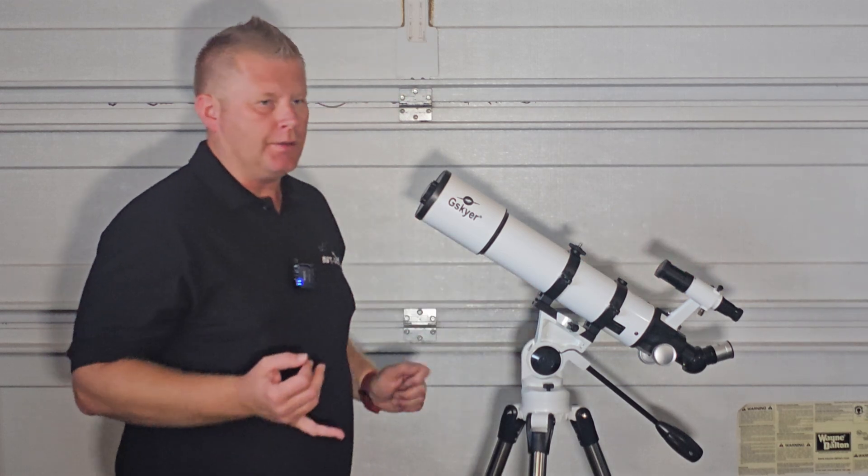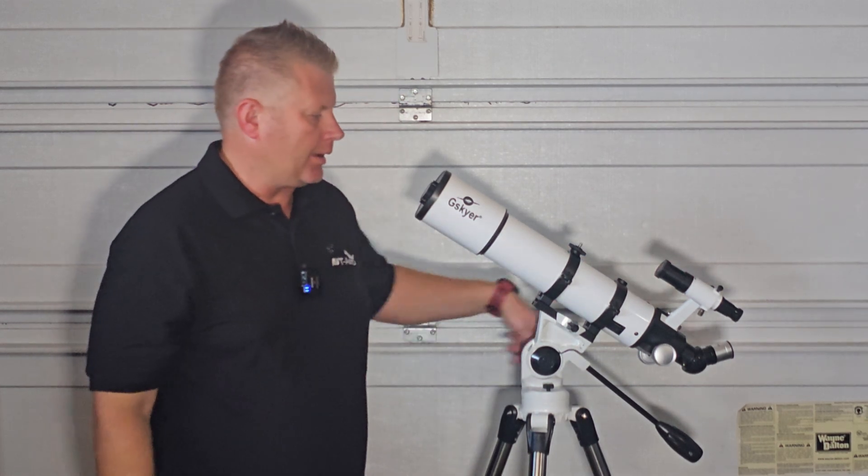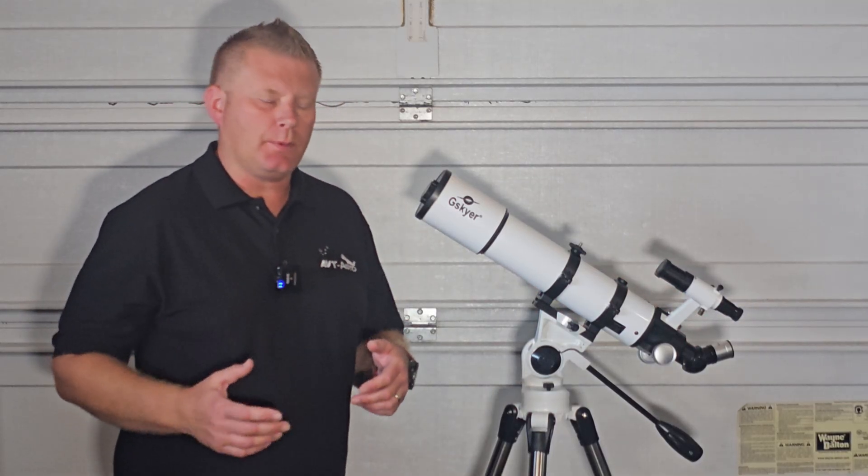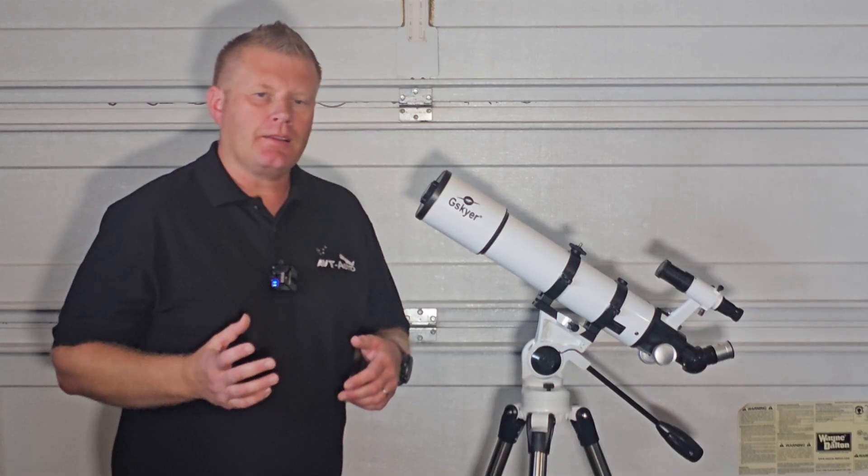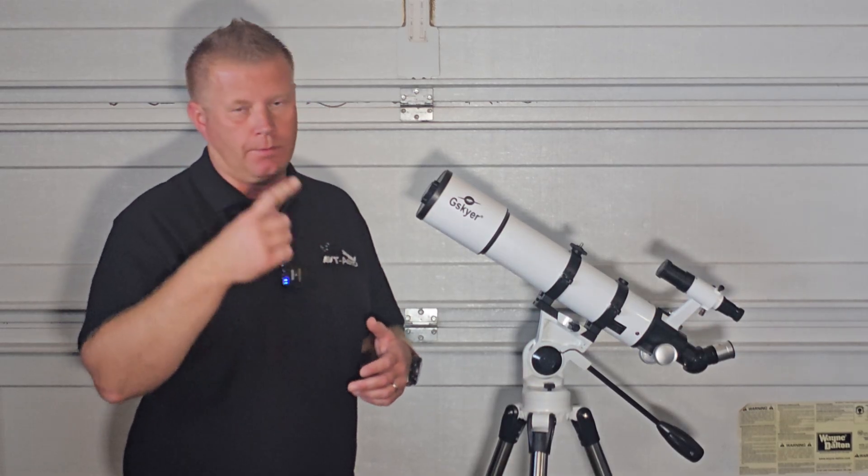For terrestrial use, if you're looking to use it for birding or looking at nature or whatever you want to look at, this diagonal, the 45 degree, is fine. For astronomy use, upgrading to a 90 degree diagonal is going to be a lot more beneficial. First of all, it's easier on your neck. Second of all, optical performance is going to be better. And again, I'll have a link to one in the description as well.